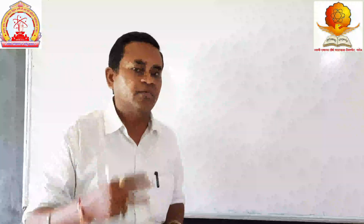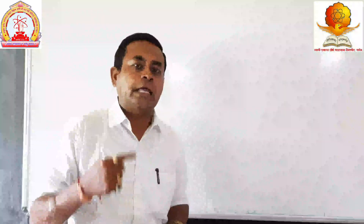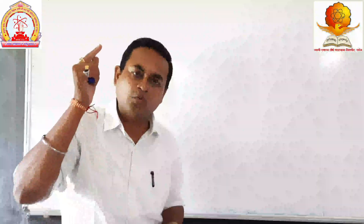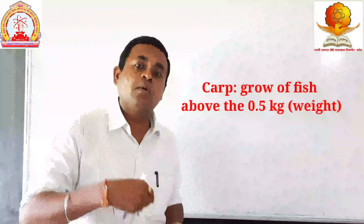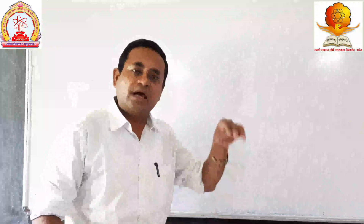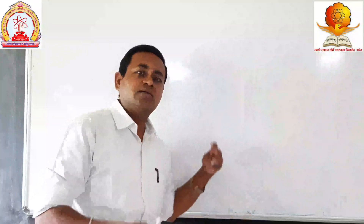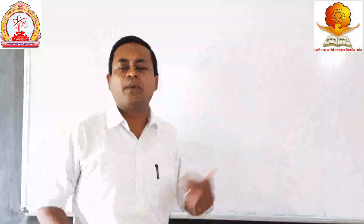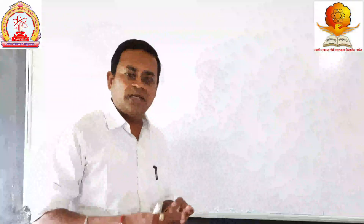In fish farm engineering in India, mostly three varieties are cultured, called Indian Major Carps. They are called Indian Major Carps because these fishes are indigenous — mostly found in India. A carp is a fish whose growth weight is above 1 kg or up to 5 kg. The three Indian Major Carps are: Katla, Labeo rohita (Rohu), and Cirrhinus mrigala (Mrigal).